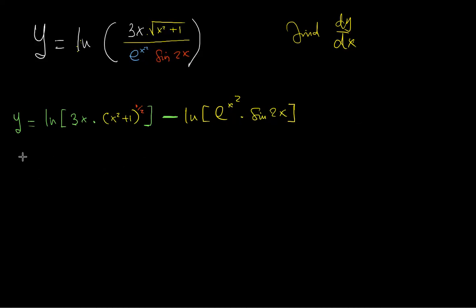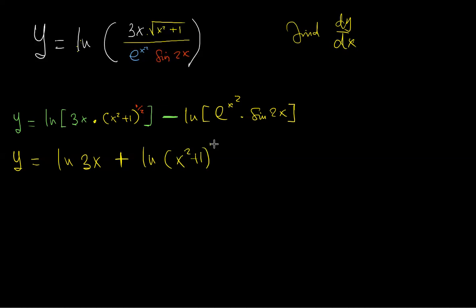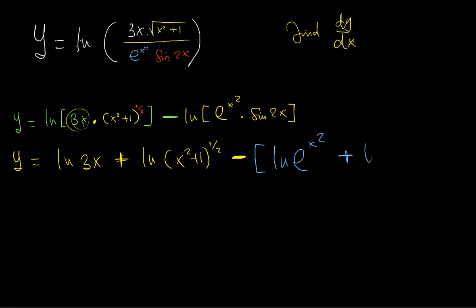Applying the ln property again: y equals ln(3x) — positive because we're multiplying — plus ln of (x² + 1) to the half. Then minus, opening a big bracket: ln of e^(x²) plus ln of sin(2x). Remember, the ln is the natural logarithmic function when you have the variable there.